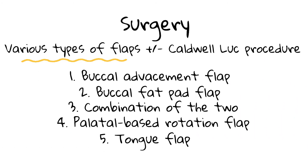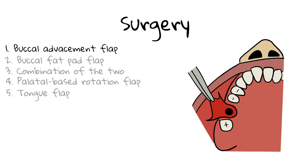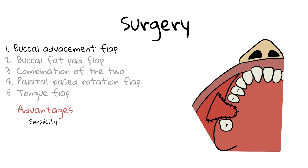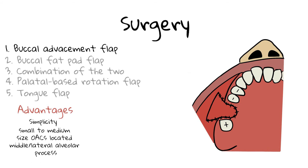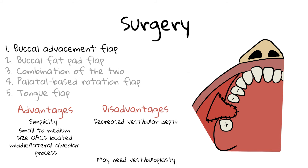There are five main types of flap designs for closing an OAC. The buccal advancement flap involves making an incision on either side of the orifice and extending it into the buccal sulcus. The flap is then sutured to the palatal margin of the defect. This technique is most commonly used due to its simplicity. It can be used for small to medium sized OACs located either laterally or in the middle of the alveolar process. The disadvantage is that it can decrease the depth of the buccal sulcus; if dentures are planned, vestibuloplasty may be needed after a few months to deepen the vestibule.